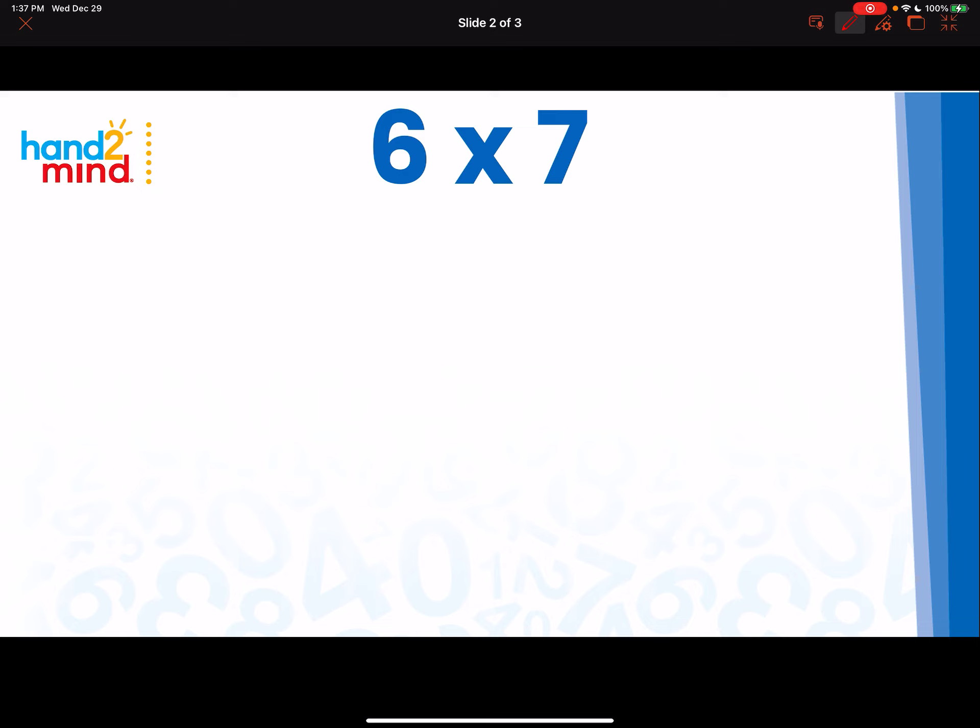So for example, if I have a 6 by 7 array, it would look something like this. It has a dimension of 6 and a dimension of 7. If I want to use the strategy using partial products to help me figure out what 6 times 7 is, I might think about 7 as decomposed into its add-ins of 5 and 2 because that might make it easier to solve the problem. So I could go 6 times 5 and 6 times 2 and know that 6 times 5 is 30 and 6 times 2 is 12, and so then I can figure out that 30 and 12 is 42.